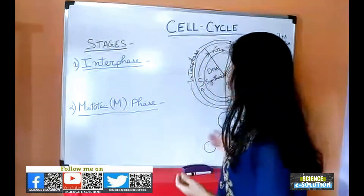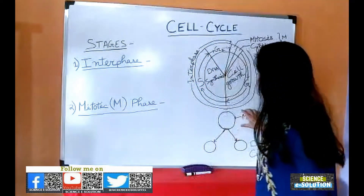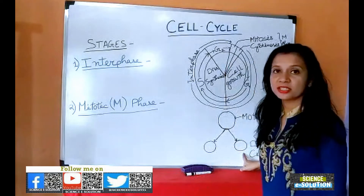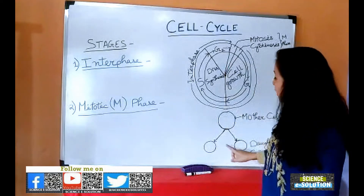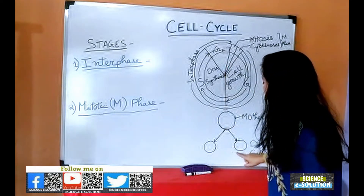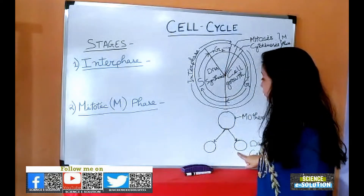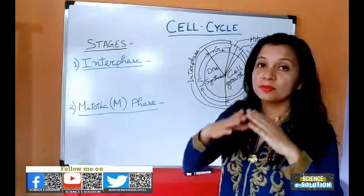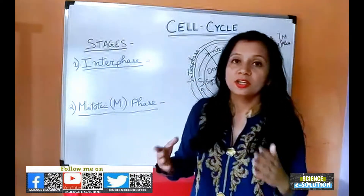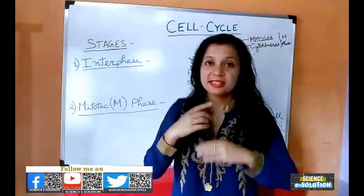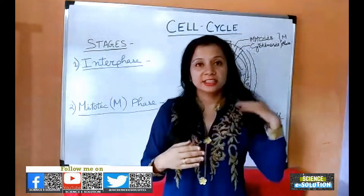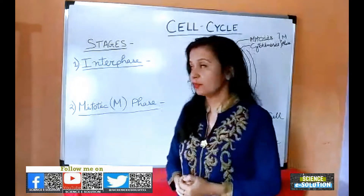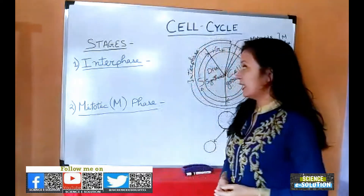We can see here in the Cell Cycle that one mother cell divides to form two new daughter cells. These two new daughter cells then act as a mother cell to form two more new daughter cells, and this process continues. This is the life cycle of a cell.